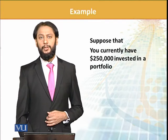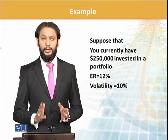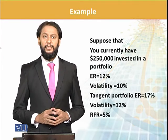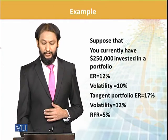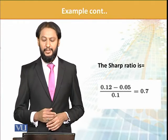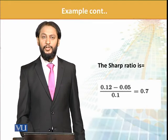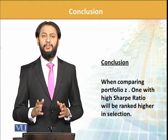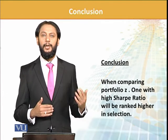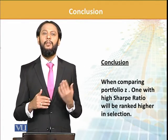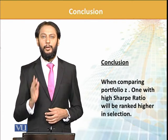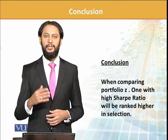Suppose you currently have $250,000 to invest with an expected return of 12%, volatility of 10%, a tangent portfolio of 17%, and a risk-free rate of 5%. The Sharpe ratio is (12% − 5%) / 10% = 0.7. As mentioned, when comparing two Sharpe ratios, the higher one is better. So if one portfolio has a Sharpe ratio of 1.2 and another has 1.6, we recommend the portfolio with the higher Sharpe ratio of 1.6. This is the basics of the Sharpe ratio.